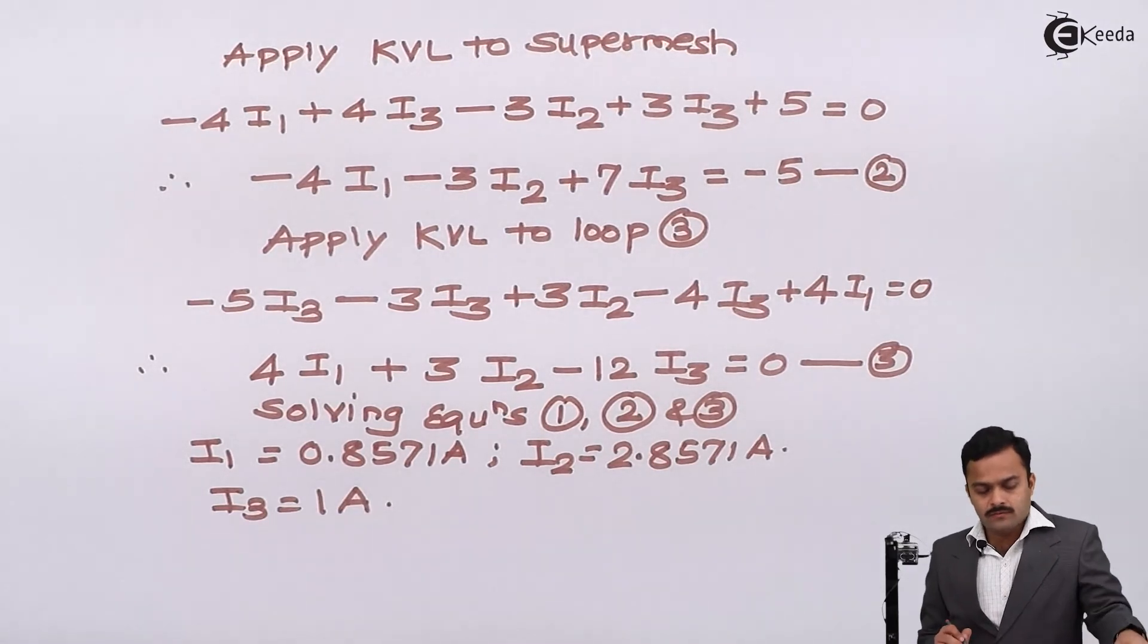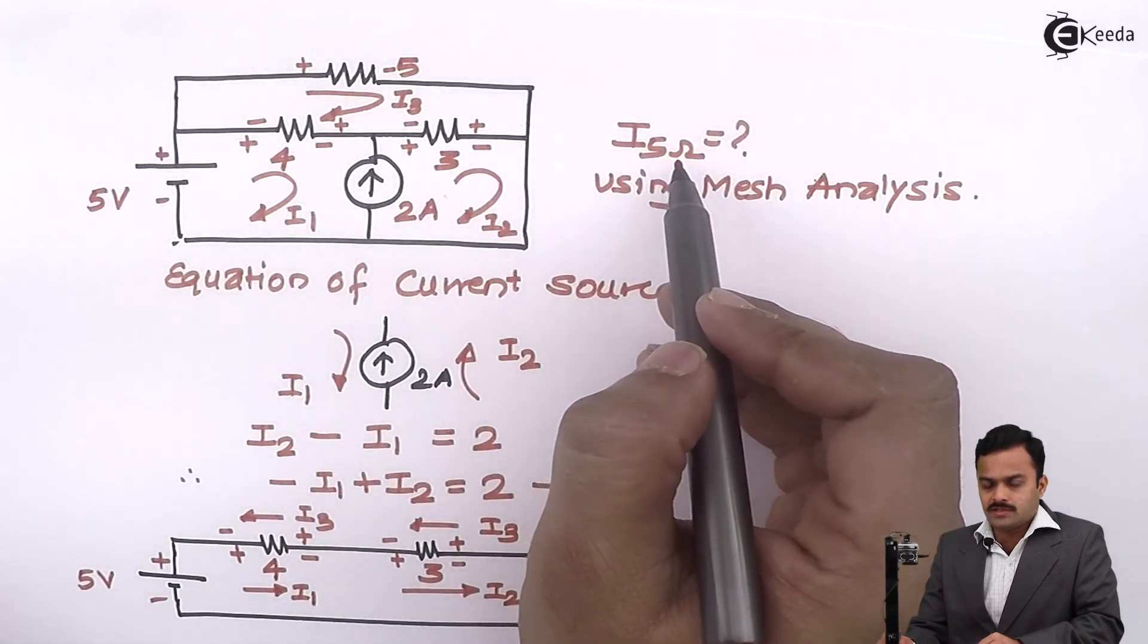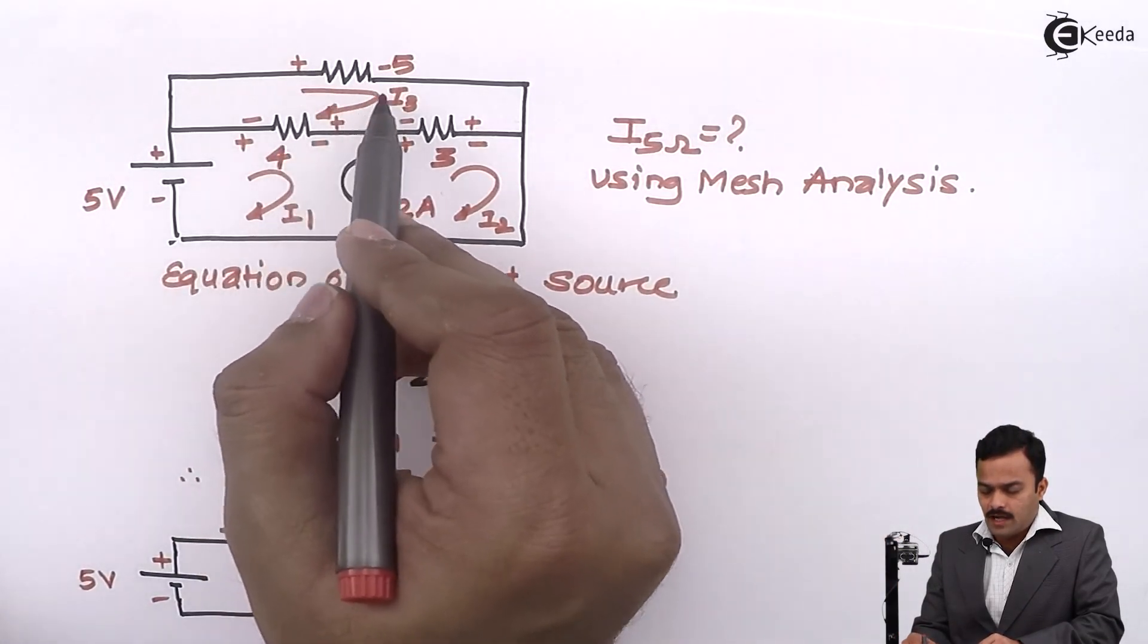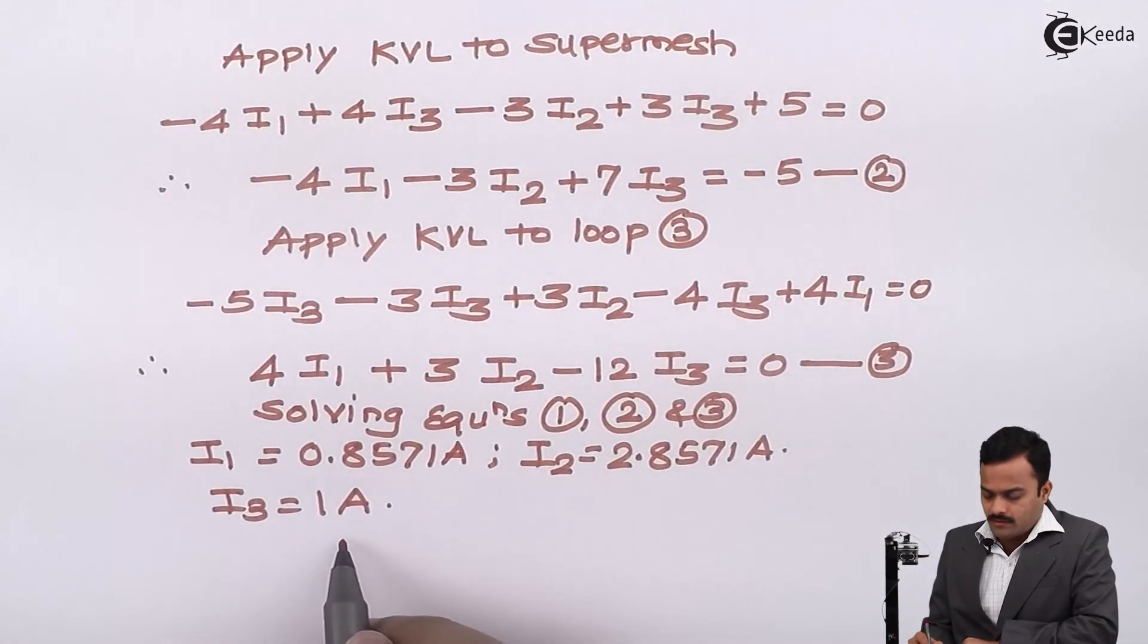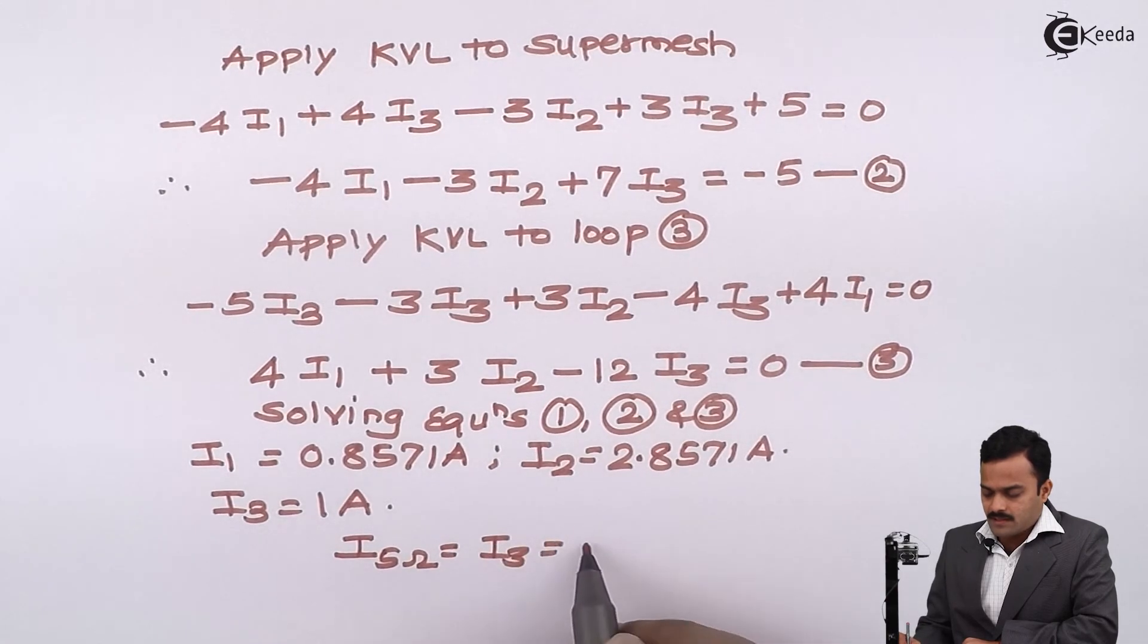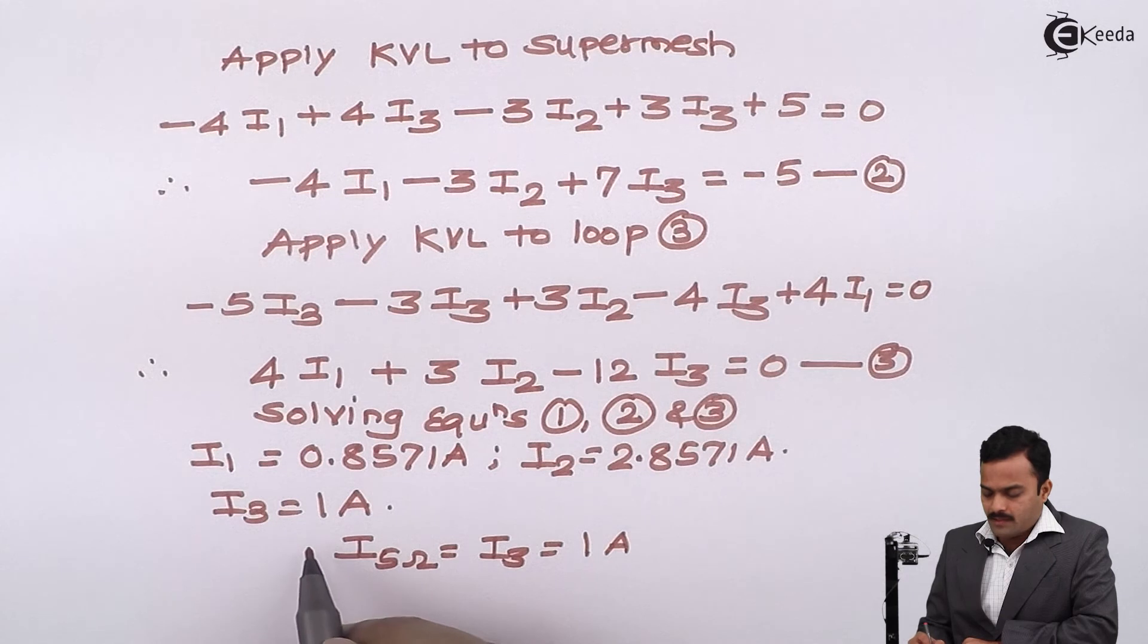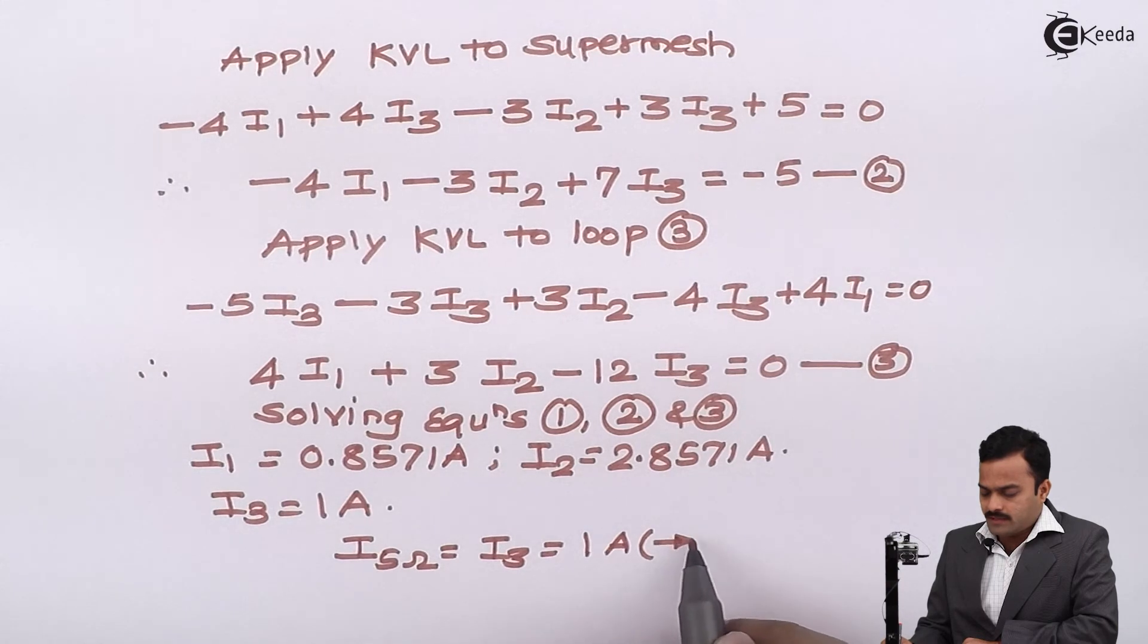The question asked was to get current flowing through the 5 ohm resistance. So for 5 ohm resistance, I3 is the current. So current flowing through 5 ohm resistance is the same as I3, which is nothing but 1 ampere. And since I'm getting the answer positive, I can draw the direction like this.